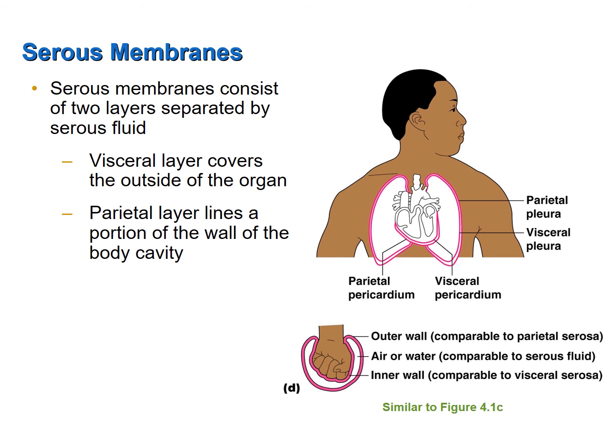To visualize this, look at the bottom of the figure on the right. Imagine taking your fist and pushing it downward into a partially inflated balloon — your fist is an organ. The part of the balloon touching your fist would be the visceral layer of the serous membrane, and the outer surface of the balloon lining the body cavity would be the parietal layer of the serous membrane.